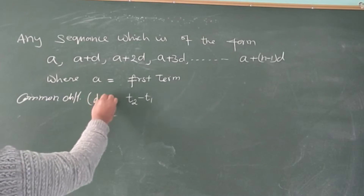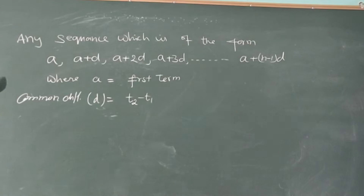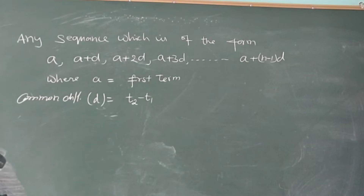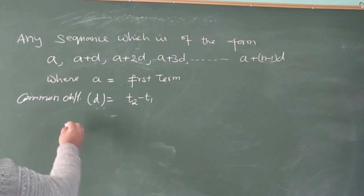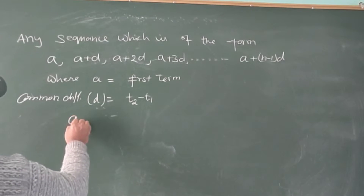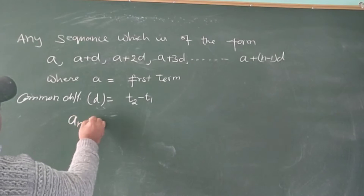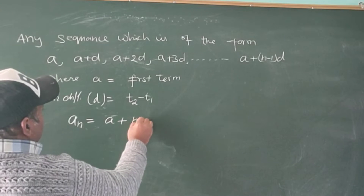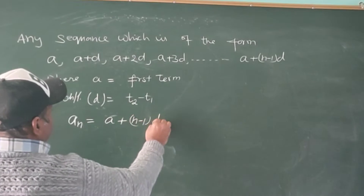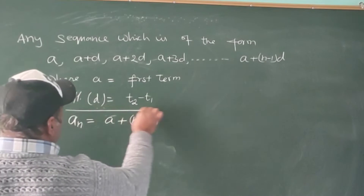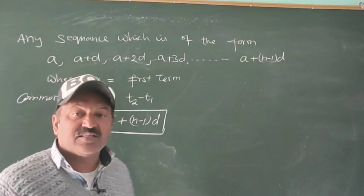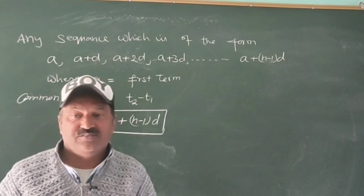Common difference D is equal to the second term minus the first term. And the general term, AN, is equal to A plus N minus 1 into D. This is the formula for the general term of an arithmetic progression.